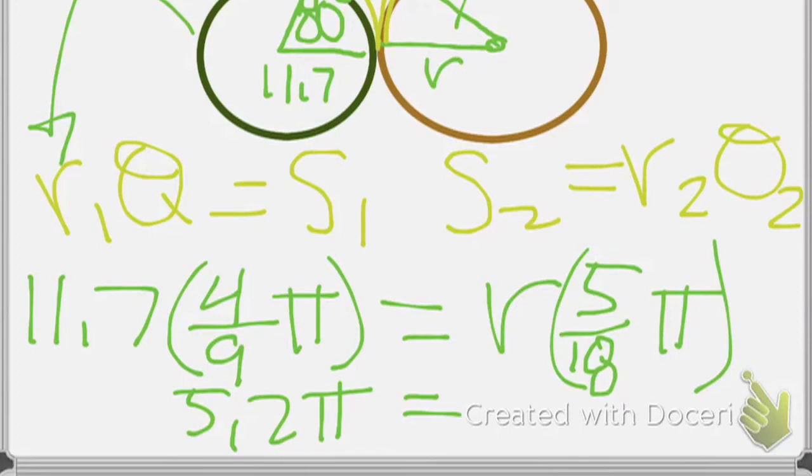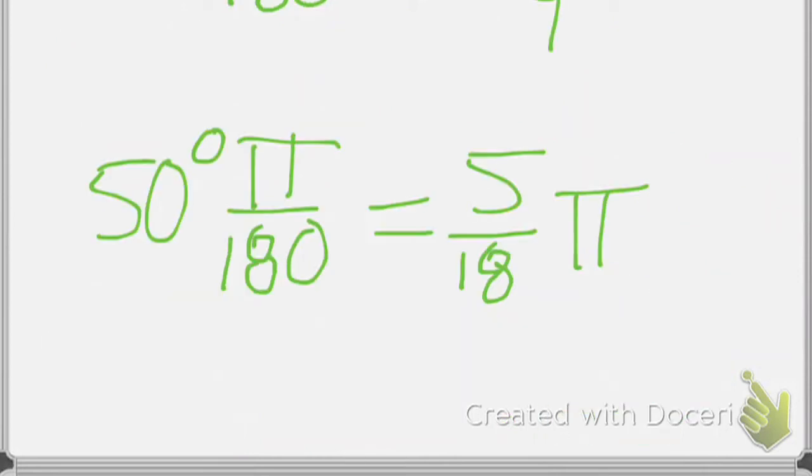That's equal to? 16.3. Okay. This time we're going to leave pi in there because we left pi in the last one. And our pi's are going to cancel out. It's going to be magical. What's 5 divided by 18? 0.27. 0.27? 0.27 pi r.